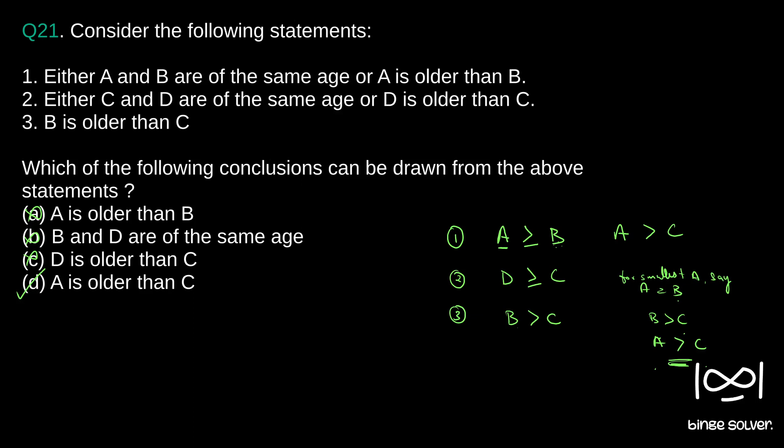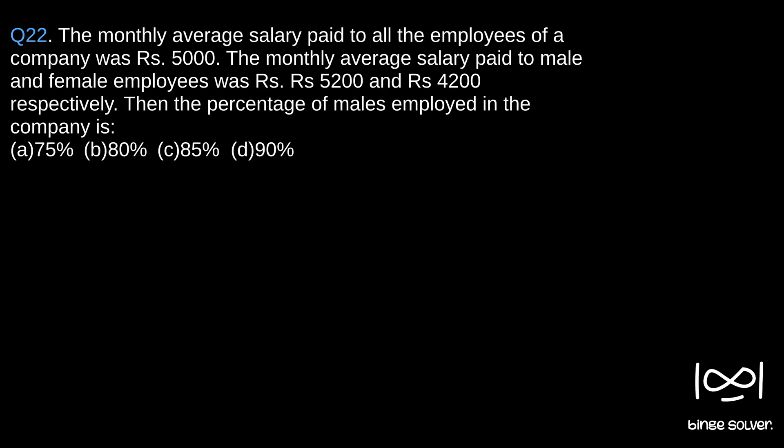Question 22: The monthly average salary paid to all the employees of a company was 5,000 rupees. The monthly average salary paid to male and female employees was 5,200 and 4,200 rupees respectively. What is the percentage of males employed in the company?